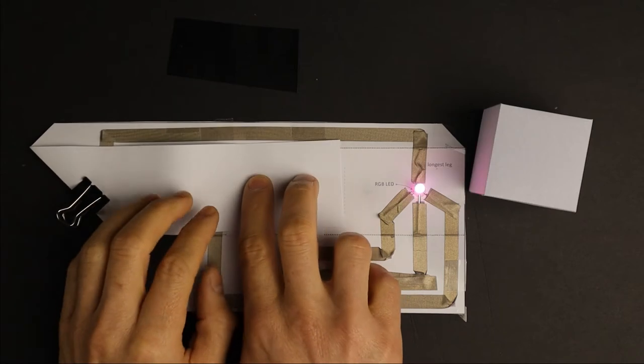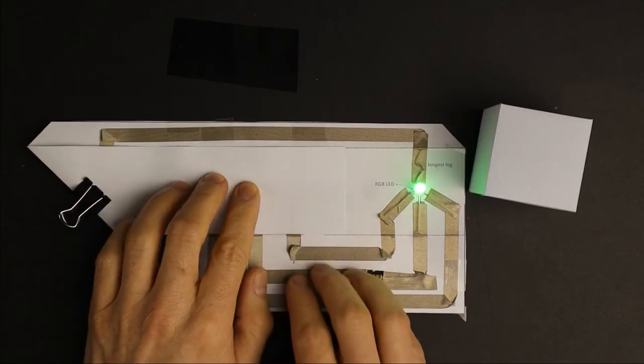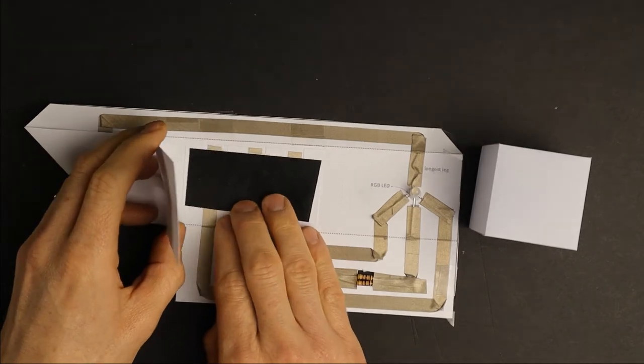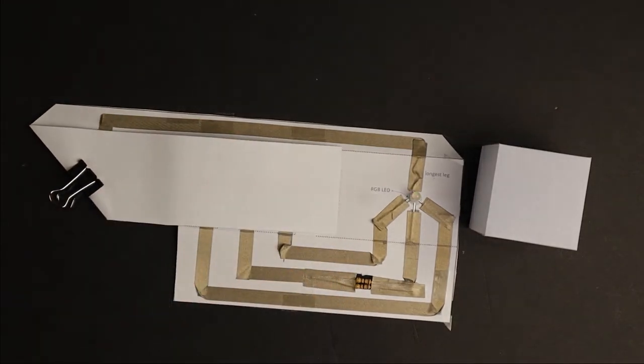Touching two points at once results in a mixed color because two colors get connected. I will explain the special role of this black paper later in the video.